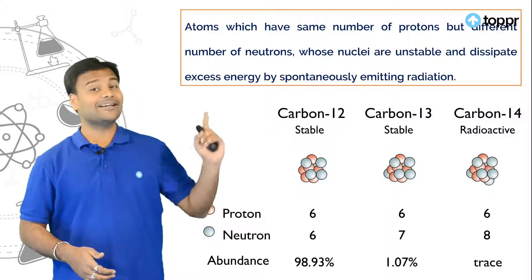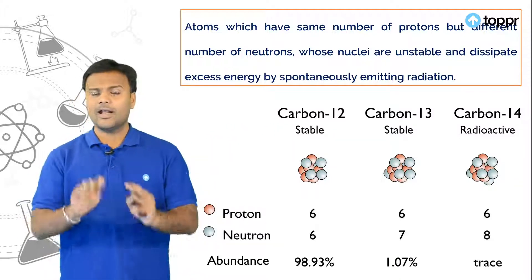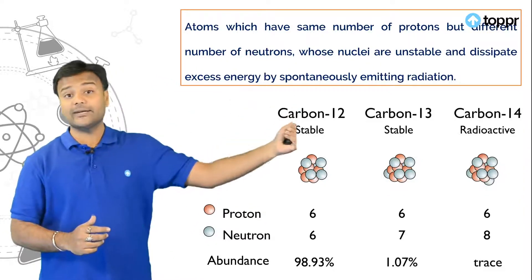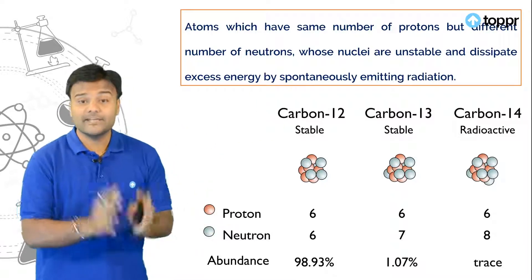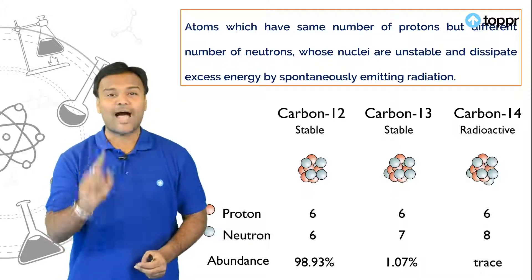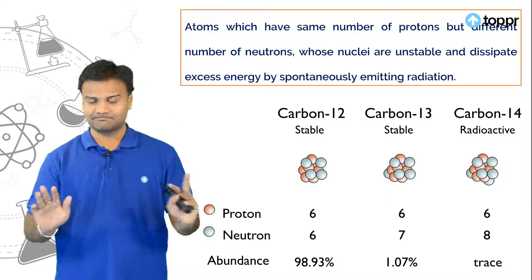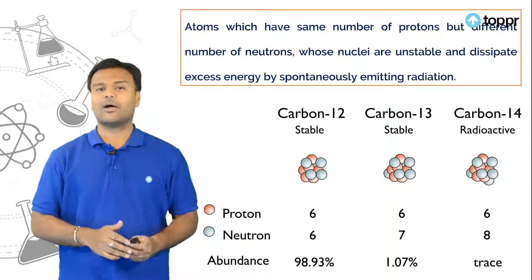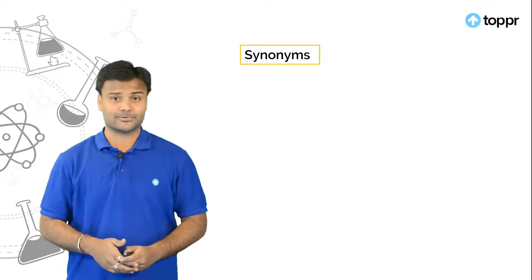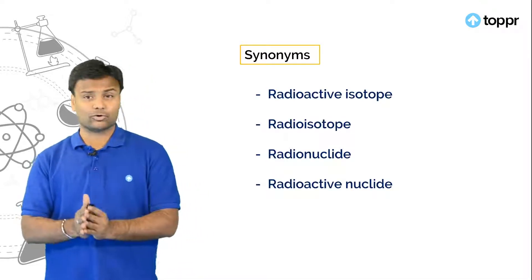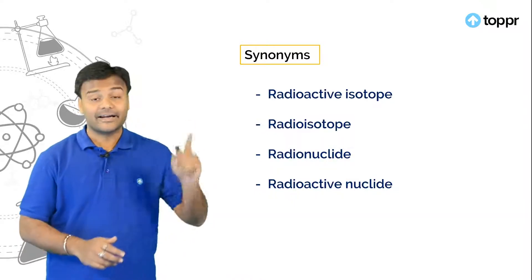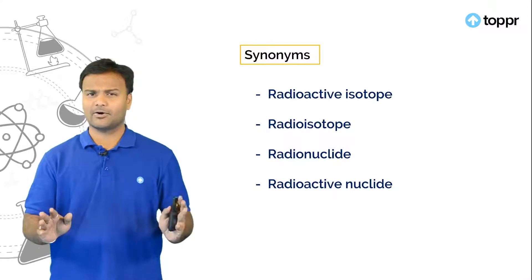So carbon 12, carbon 13 and carbon 14. Now carbon 12 and 13 these are stable isotopes. Whereas carbon 14 this is unstable isotope. Which means this carbon 14 acts as a radioactive isotope for the carbon 12. Now let us see what are the other names or what are the synonyms for these radioactive isotopes. So radioactive isotope is also called as radioisotope, radionuclide or radioactive nuclide.